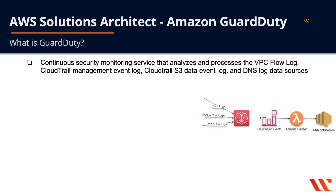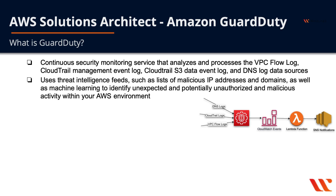GuardDuty is a continuous security monitoring service that analyzes and processes the VPC flow logs, CloudTrail management event logs, CloudTrail S3 data event logs, and DNS log data sources. It uses threat intelligence feeds, such as lists of malicious IP addresses and domains, as well as machine learning to identify unexpected and potentially unauthorized and malicious activity within your AWS environment.